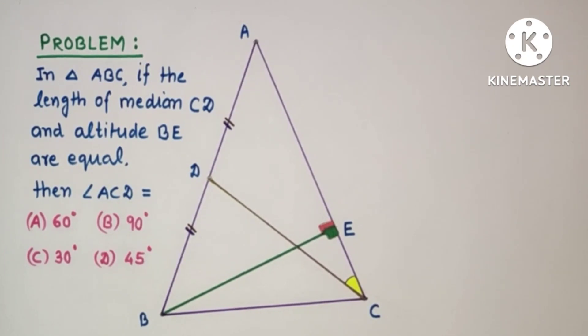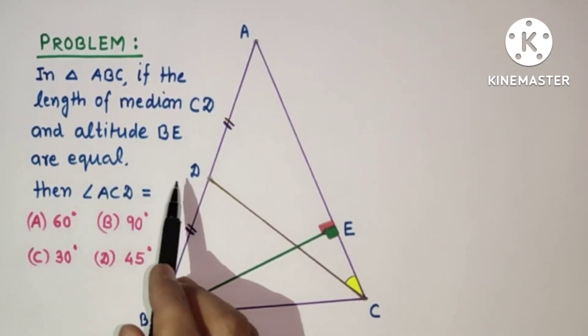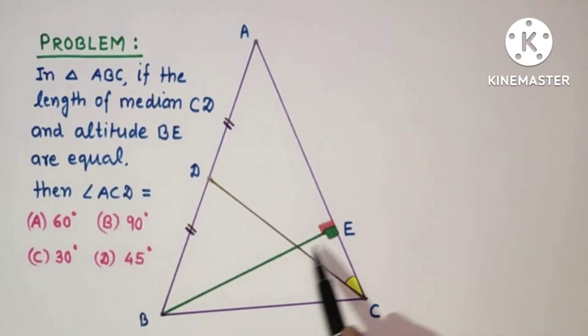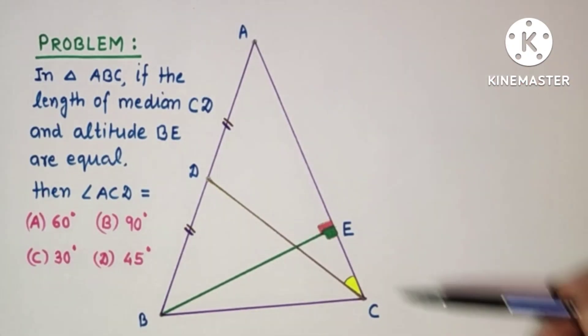In this problem we have a triangle ABC in which median CD length is equal to altitude BE length, and we have to find the value of angle ACD.